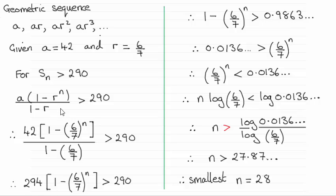You might have a different version where we multiply top and bottom by minus 1 and that will give us a times r to the power n minus 1 all over r minus 1. You could still use that formula but it's easier to use this version when the common ratio is less than 1 as it is, 6 sevenths.